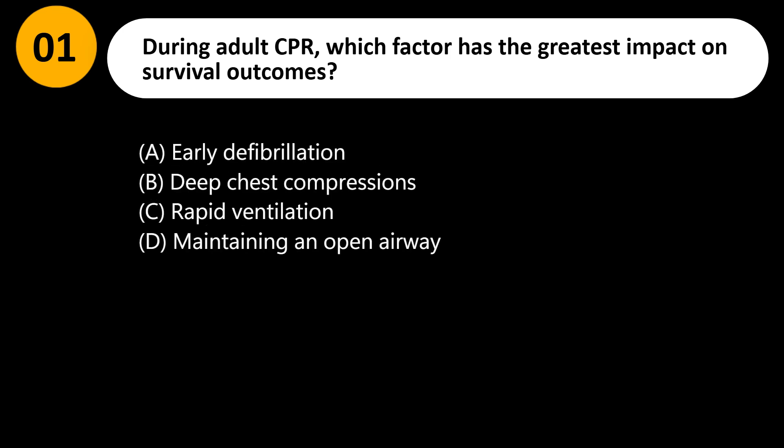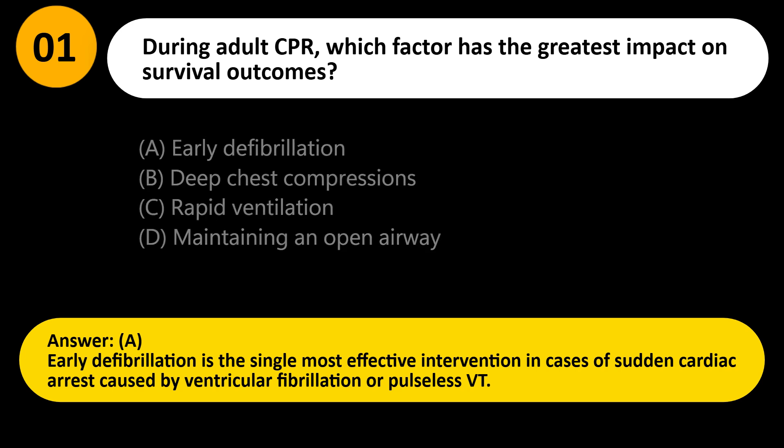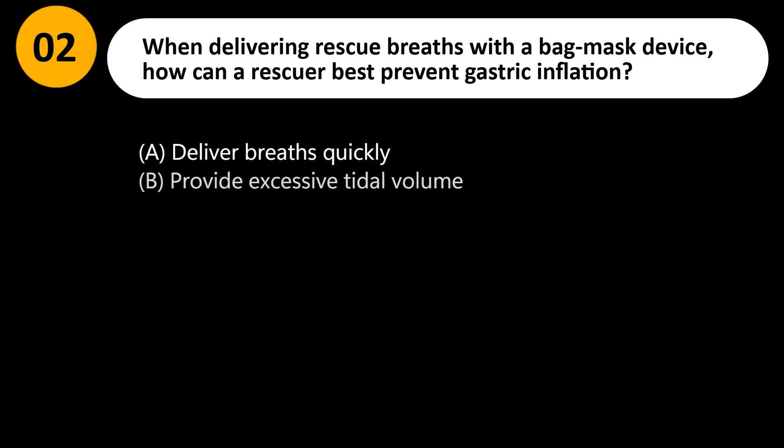During adult CPR, which factor has the greatest impact on survival outcomes? A) Early defibrillation, B) Deep chest compressions, C) Rapid ventilation, D) Maintaining an open airway. Answer: A. Early defibrillation is the single most effective intervention in cases of sudden cardiac arrest caused by ventricular fibrillation or pulseless VT.